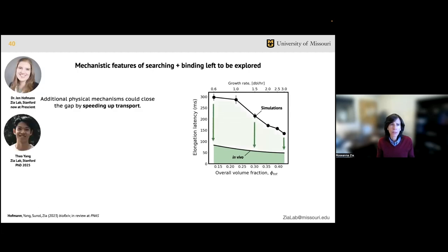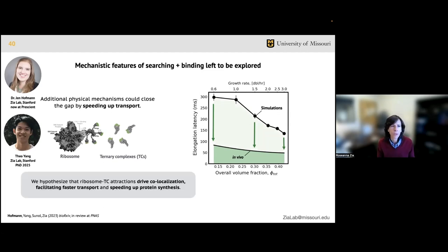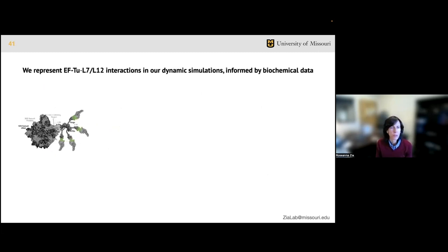Summing these transport and reaction times produces the overall elongation time, and our bottom-up unfitted simulations in symbols can predict the qualitative speedup observed in experiment, which is in green, and demonstrate the mechanistic origin of the speedup, which is faster transport, rather than just chemistry inside the ribosome. However, the absolute predictions of translation time from this initial model are about three times slower than in vivo, suggesting there's additional mechanisms left unexplored. We were curious if the gap could be closed by other physical mechanisms that speed up the transport process. Specifically, I asked Jennifer to focus on attractions between ribosomes and ternary complexes, shown here in green, which are hypothesized to preload up to four ternary complexes onto ribosomes at one time.